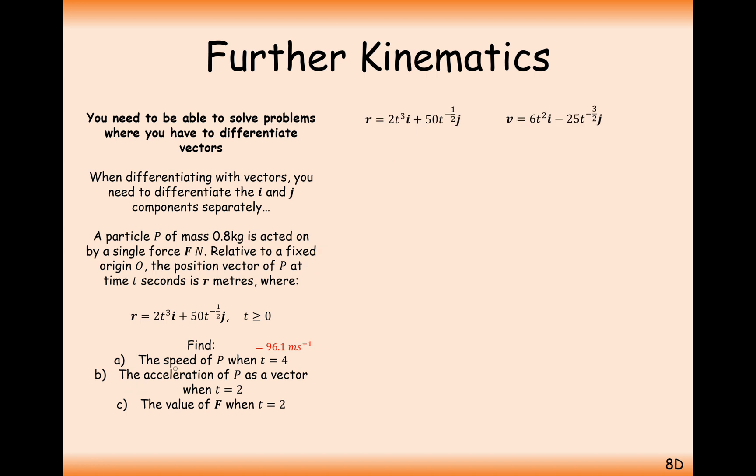Moving on to the next part then, we have the velocity. And then we want to work out the acceleration of P when t equals 2. So we're going to have to differentiate again. So kind of the second derivative on our original equation. Or we can just differentiate the velocity that we've already got. So doing each of the components separately, 6t squared differentiates to 12t. And this part here differentiates to plus 37.5t times minus 5 over 2.